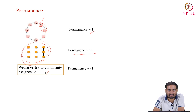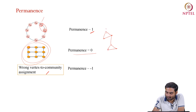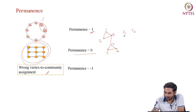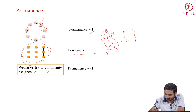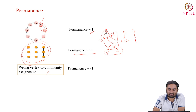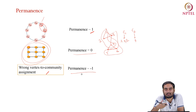If you wrongly assign a vertex to a community — for example, in a 6-node network with two natural communities C1 and C2, you randomly assign nodes 1, 4, and 2 to one group and nodes 3, 5, 6 to another — the permanence tends to −1. So from the permanence value you can judge whether a network is even qualified to be passed into a community detection algorithm.